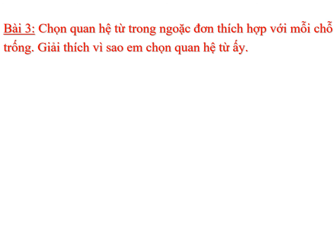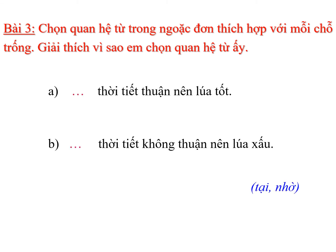Bài 3: Chọn quan hệ từ trong ngoặc đơn thích hợp với mỗi chỗ chấm. Giải thích vì sao em chọn quan hệ từ ấy. Câu A: Thời tiết thuận lợi tốt. Câu B: Thời tiết không thuận lợi xấu. Em sẽ sử dụng quan hệ từ tại và nhờ để điền vào câu A và câu B. Các em chọn sao cho quan hệ từ đó phải phù hợp với từng hoàn cảnh và nội dung của câu. Kết quả: Câu A dùng quan hệ từ nhờ - Nhờ thời tiết thuận nên lợi tốt. Câu B dùng quan hệ từ tại - Tại thời tiết không thuận nên lợi xấu. Đối với nguyên nhân dẫn đến kết quả tốt ta dùng nhờ; nguyên nhân dẫn đến kết quả xấu ta dùng tại.